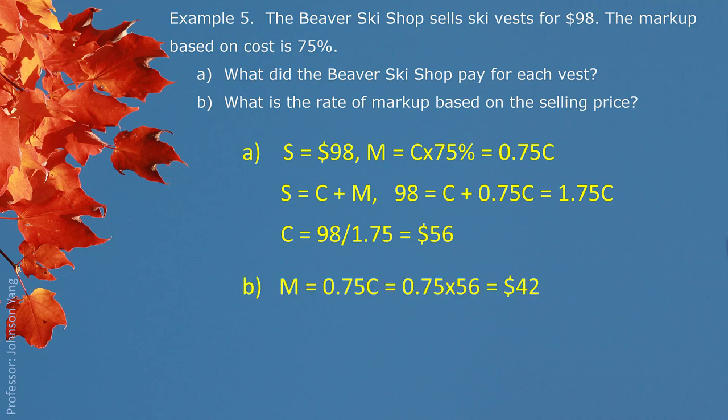Then we can find out part B. Finish the calculation about markup. 0.75C gives us $42. So the written markup based on selling price, 42 divided by 98 gives us 42.86%.